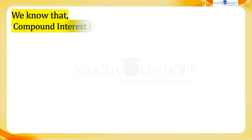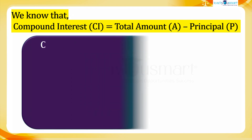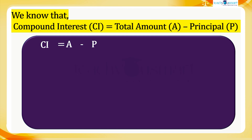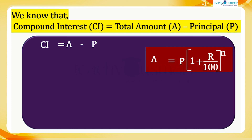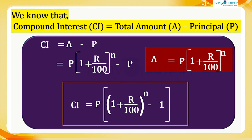We know that compound interest CI equals total amount A minus principal P, that is CI equals A minus P. We have A equals P × (1 + r/100)ⁿ. Therefore, CI equals P × (1 + r/100)ⁿ minus P. Taking P as common, CI equals P × [(1 + r/100)ⁿ − 1], which is the formula for calculating compound interest for n years.